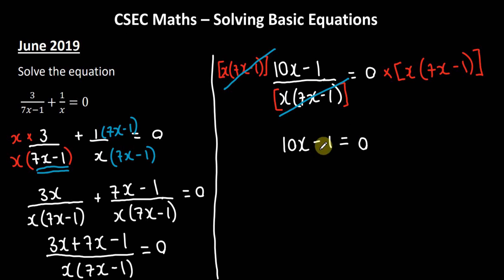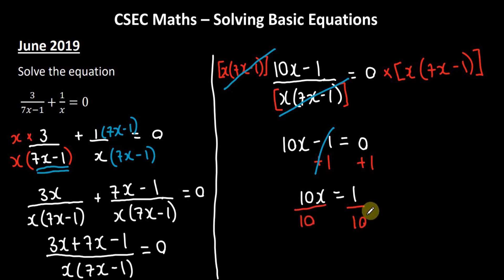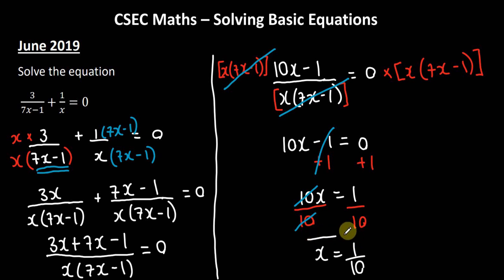This looks a whole lot better than what we started with. To get rid of minus 1, we add 1 to both sides: negative 1 plus 1 is 0, leaving 10x equals 1. Then we divide both sides by 10. The 10 cancels, and x equals 1/10. That is your answer.